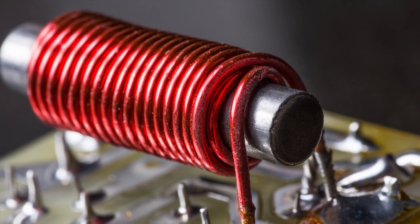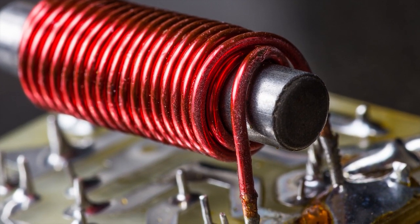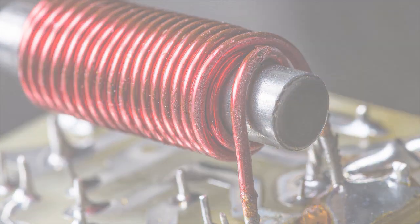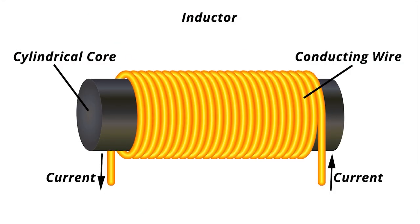It consists of a conductor, such as a wire, usually wound into a coil. When the current flowing through an inductor changes, the time-varying magnetic field induces a voltage in the conductor.